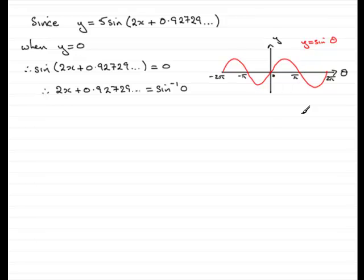We've got to be careful with this question though because we're given a range. We're given a range of values for x to be between and including minus pi to pi. And it's very tempting just to say the answer is 0. But we're not dealing with x, we're dealing with this angle here, 2x plus 0.92729, etc.